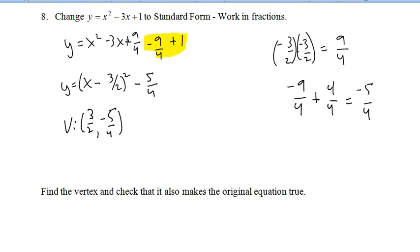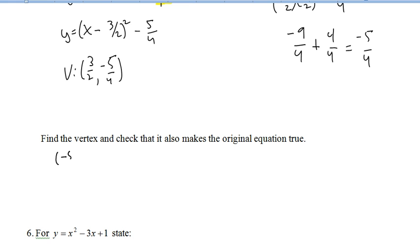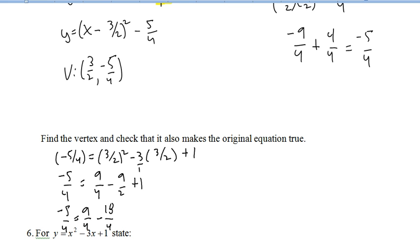Let's fire that into our original as a quick check. So 3 over 2 times 3 over 2 is going to be 9 over 4. Negative 3 is the same as negative 3 over 1. So that's going to be minus 9 over 2, and then plus 1. Looks like we're going to need a common denominator of 4. So that's going to give us negative 5 over 4 equals 9 over 4 minus 18 over 4, because we needed to multiply top and bottom there by 2, and 1 is the same as 4 over 4. So we've got 9 minus 18 plus 4 is negative 5. So we're good.